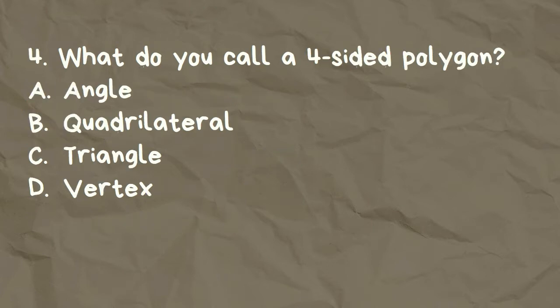What do you call a four-sided polygon? A. Angle, B. Quadrilateral, C. Triangle, D. Vertex.